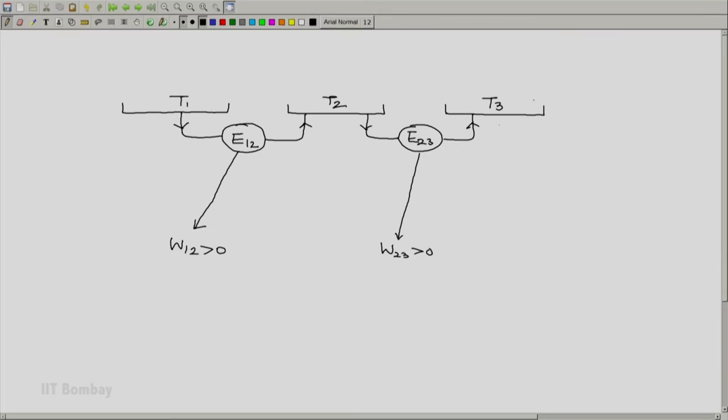Now, our option B said that we have an engine E31 working between T3 and T1 such that it absorbs heat from the reservoir at T3 and rejects it to the reservoir at T1.